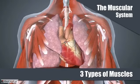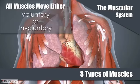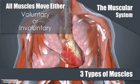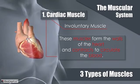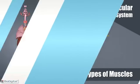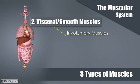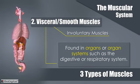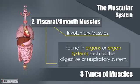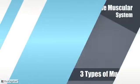The muscular system is divided into three main types of muscles, and each of these types can be moved either voluntarily or involuntarily. The cardiac muscle is an involuntary muscle, meaning it operates without any conscious control. These muscles form the walls of the heart and contract to circulate the blood. The visceral or smooth muscles are also considered involuntary and are found in organs or organ systems such as the digestive or respiratory system.